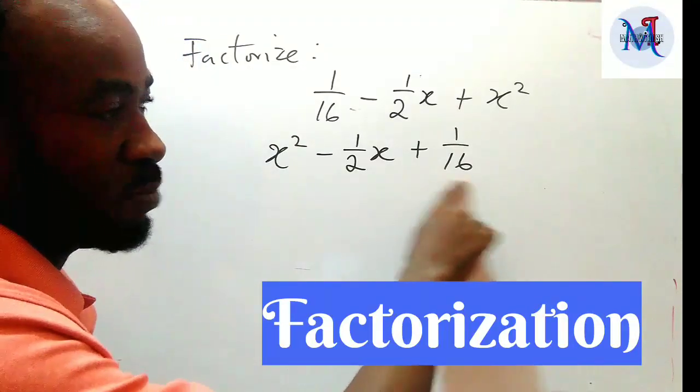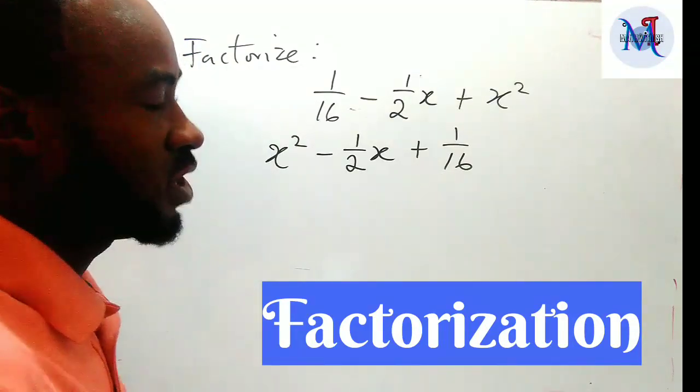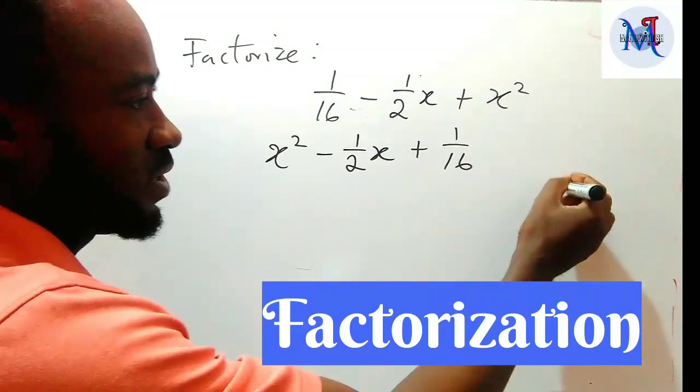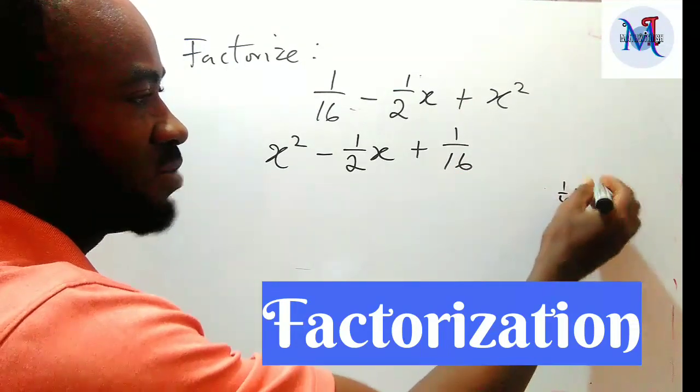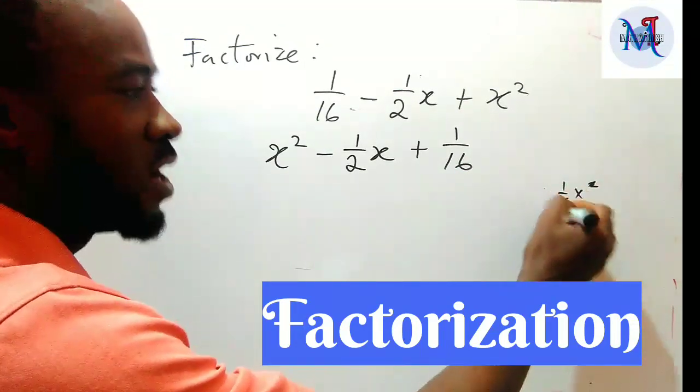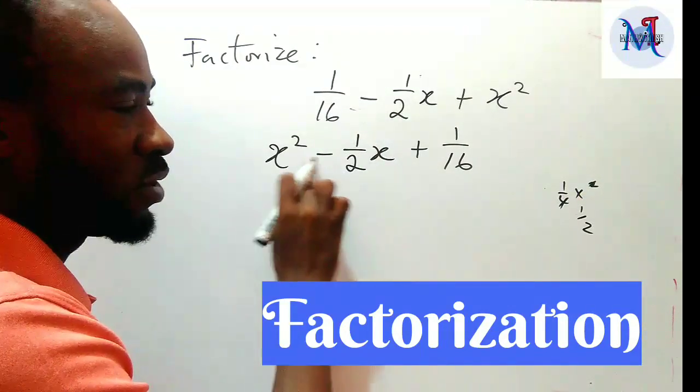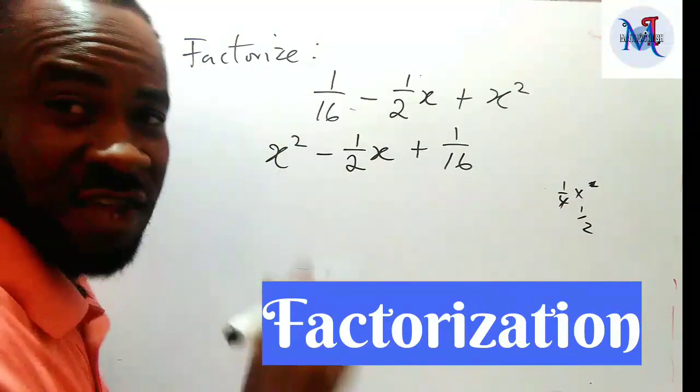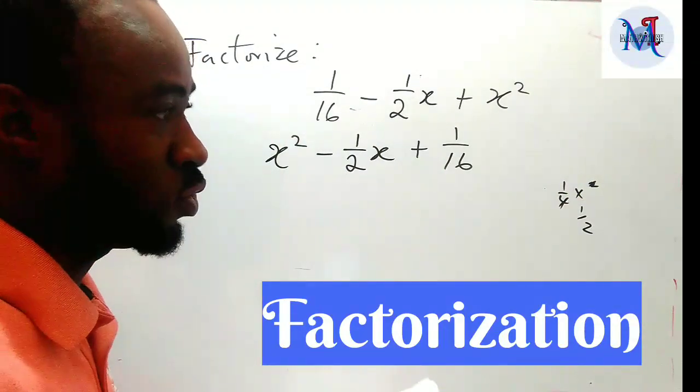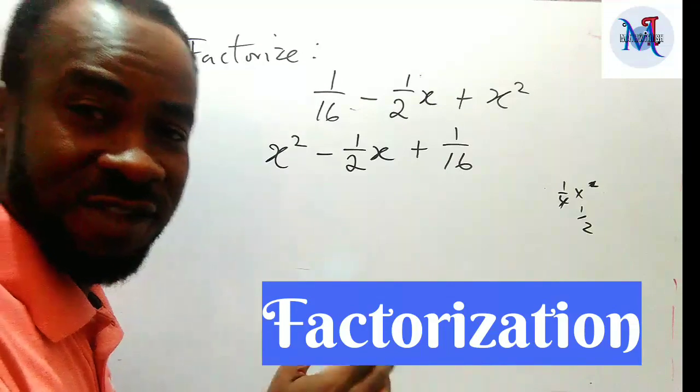So let's check. If you check, this is a perfect square. If you take the square root of this, that is 1/4. And when you multiply this 1/4 by 2, that gives you 1/2, and we are having 1/2 here. Remember I said we are not taking cognizance of the sign for now. So this will now help us to factorize this easily.